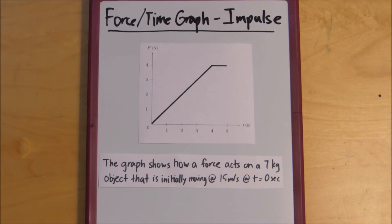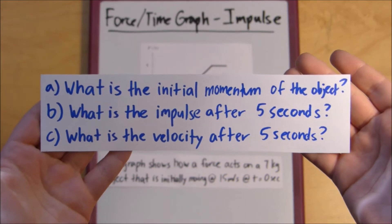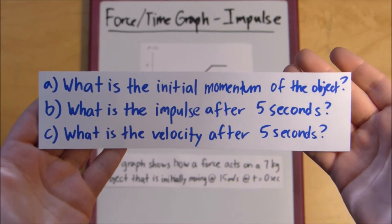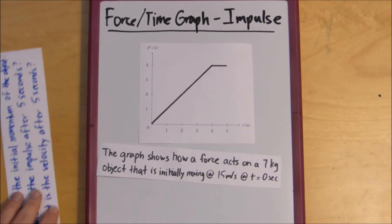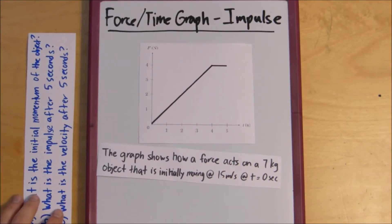So, here are our three questions. What is the initial momentum of the object? What is the impulse after 5 seconds? And what is the velocity after 5 seconds? Alright, so I'll put these off to the side. So, our first question is, what's the initial momentum?